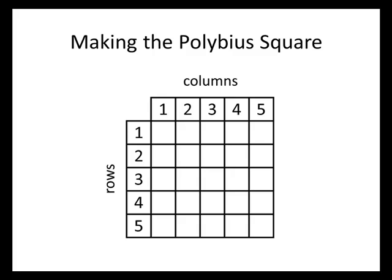The first thing we need to do is take our keyword, which is the word Eagles, and start filling those letters into this square. That's how the keyword affects this cipher — different keywords will give us different squares, giving a different way to encode the message. Starting in the upper left, the row 1, column 1 position, we're going to start writing the word Eagles, filling in the letters across the rows. But we want to make sure that we never repeat any letters. So when we get to the second E in the word Eagles, we skip over it and go straight to the S, because we already have an E in the upper left-hand corner.